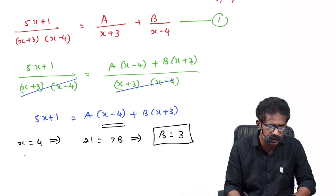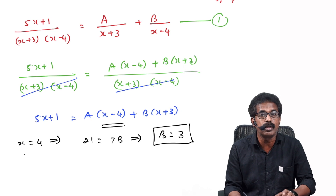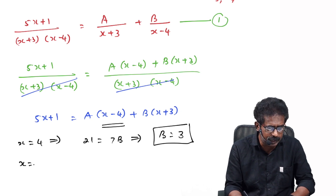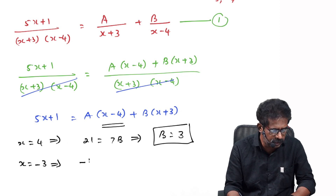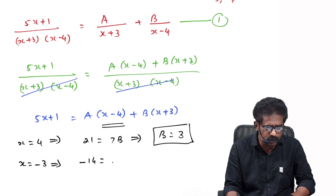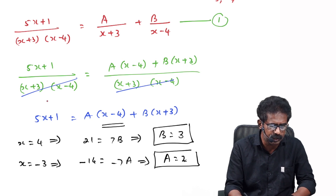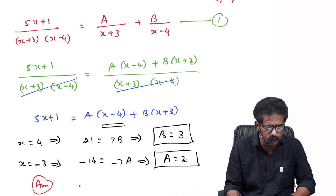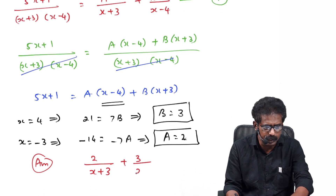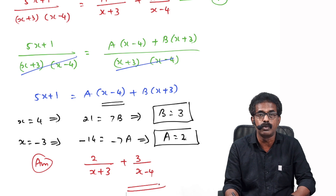Now to find A, make the other factor (x+3) zero by putting x=−3: left side gives 5(−3)+1 = −14; right side the second term is zero, leaving A(−3−4) = −7A. So −7A = −14, and cancelling the negatives gives A = 14/7 = 2. Both values found: A=2, B=3. Substituting: the answer is 2/(x+3) + 3/(x−4).